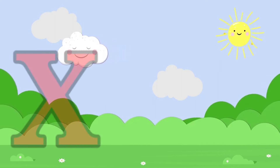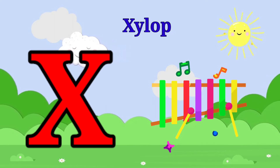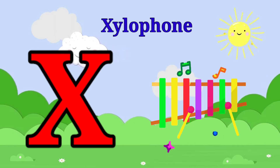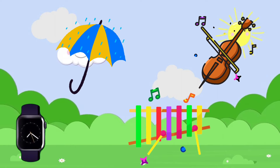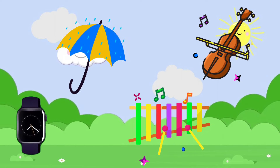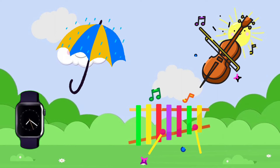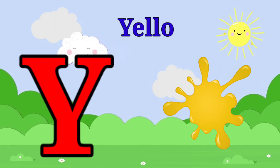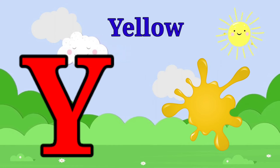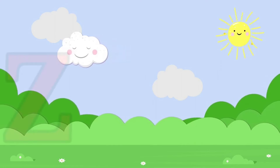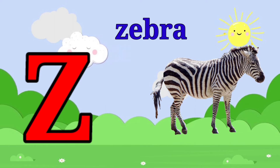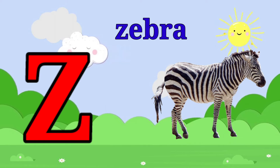X is for xylophone, x-x-xylophone. Y is for yellow, ye-ye-yellow. Z is for zebra, z-z-zebra.